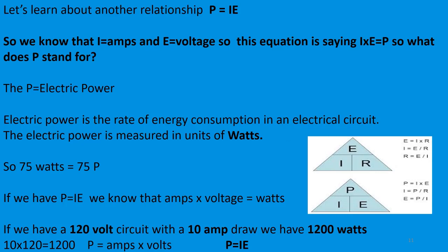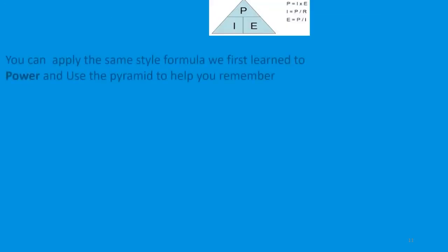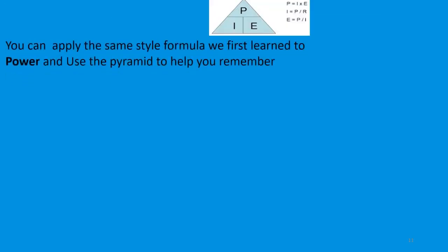P equals amps times volts, or P equals IE. You can apply the same pyramid-style formula we first learned to power and use that pyramid to help you remember.